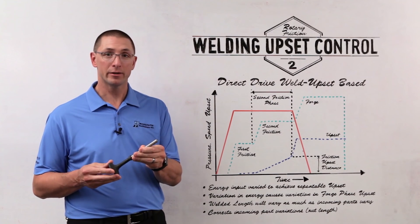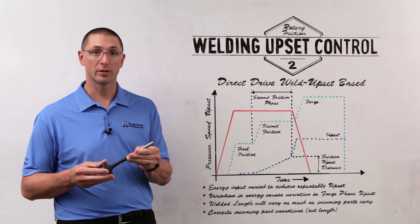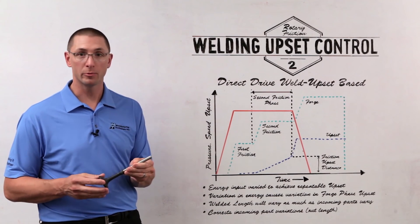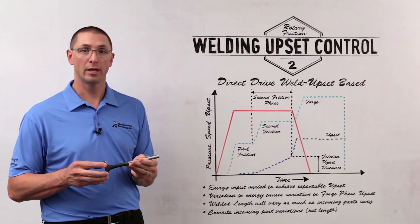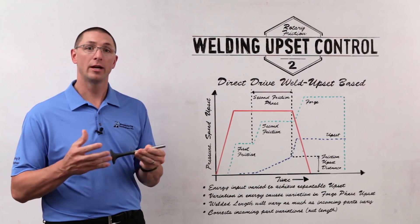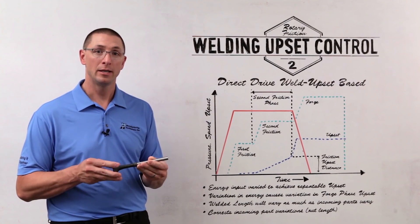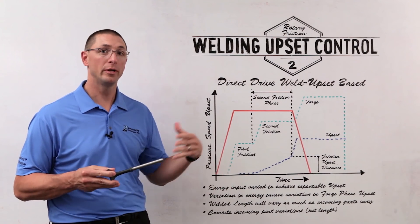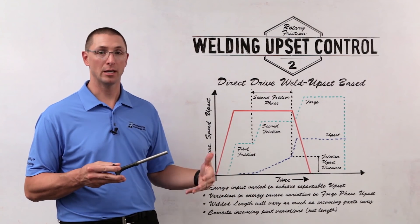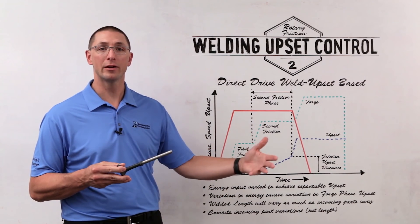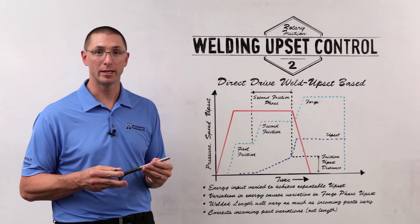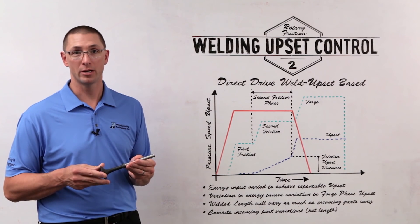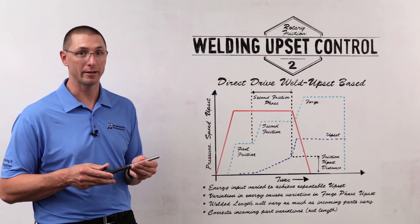So now if I have area differences, for example, my larger part will spend more time rotating, creating more heat, in order to get the same amount of upset. So I'm putting more energy in, allowing the energy to vary to overcome any incoming part variations that we might have.